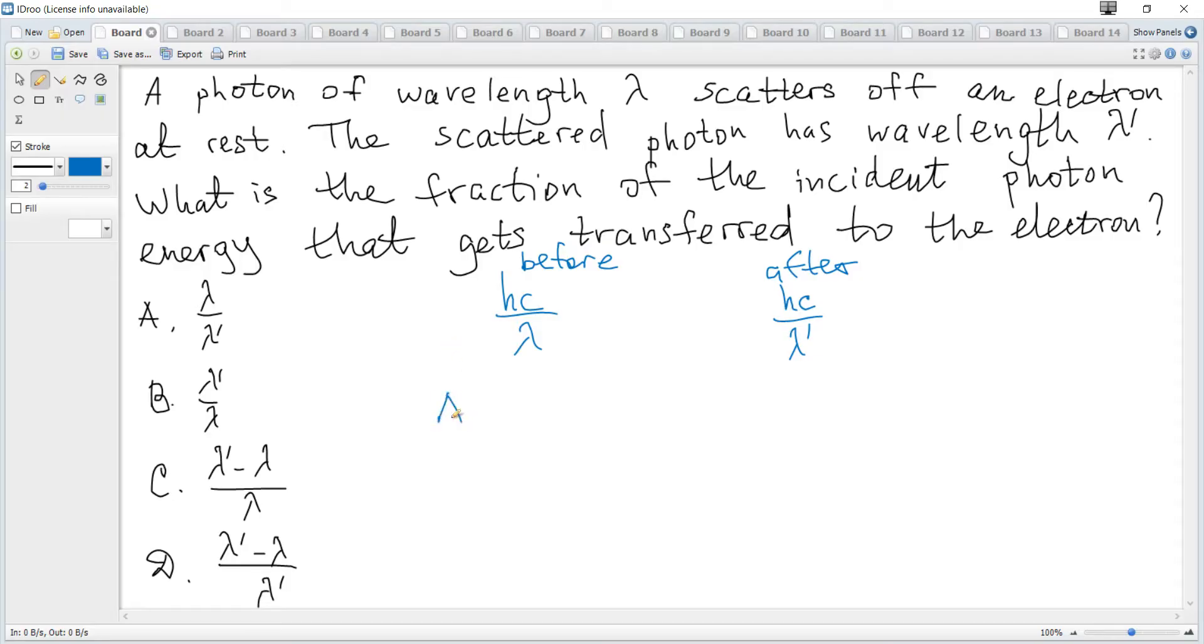The change in energy, which will actually be energy transferred to the electron, becomes hc over lambda minus hc over lambda prime.